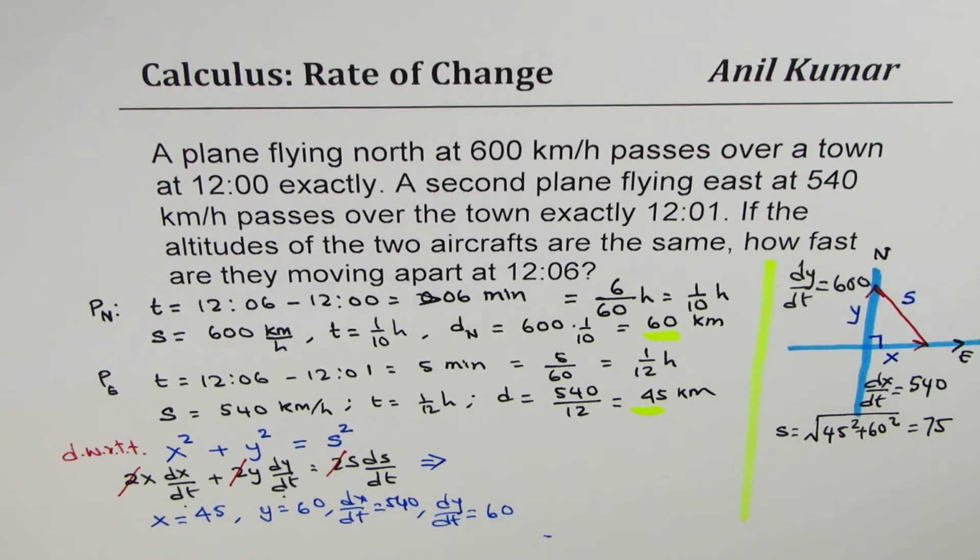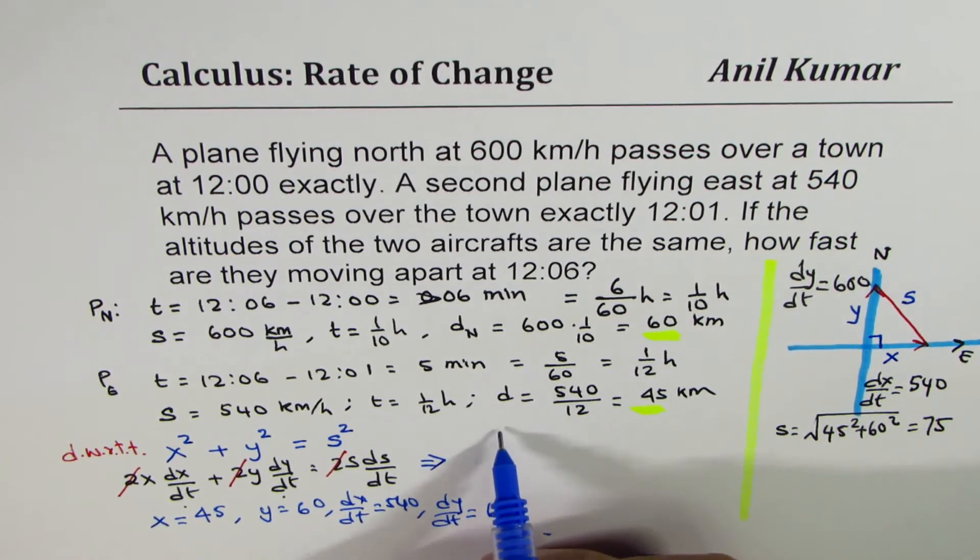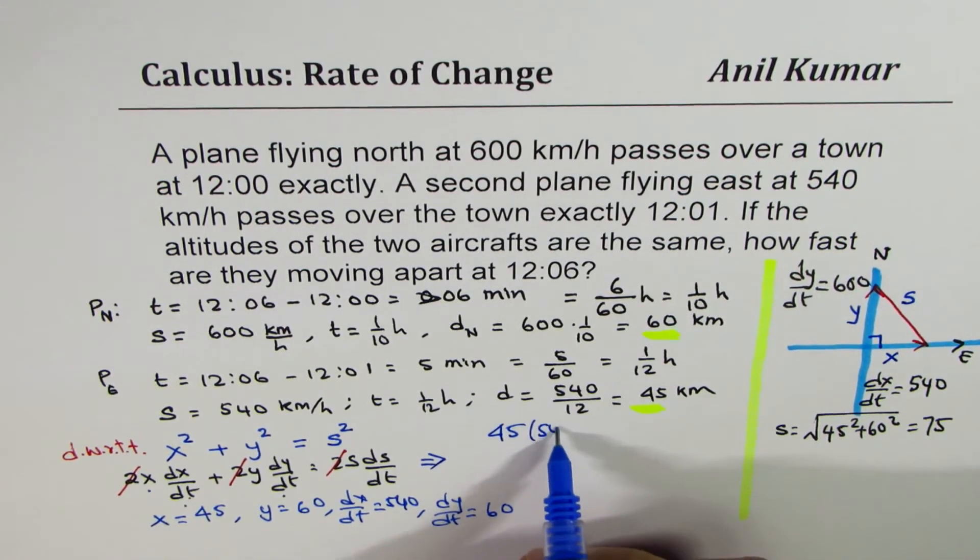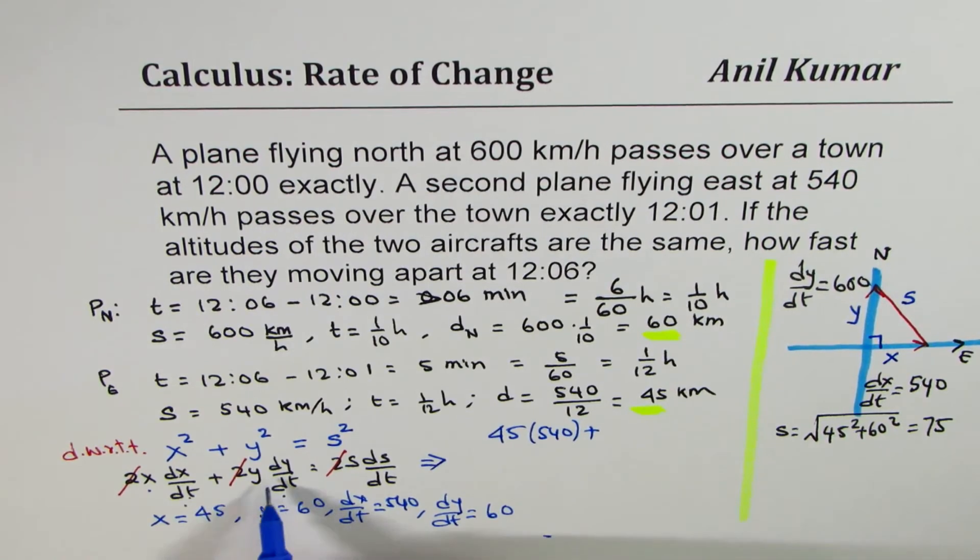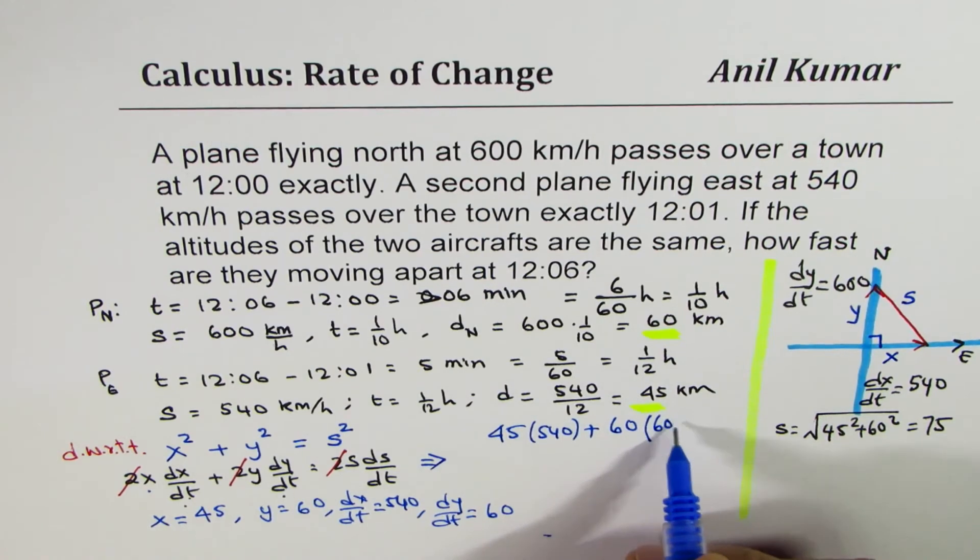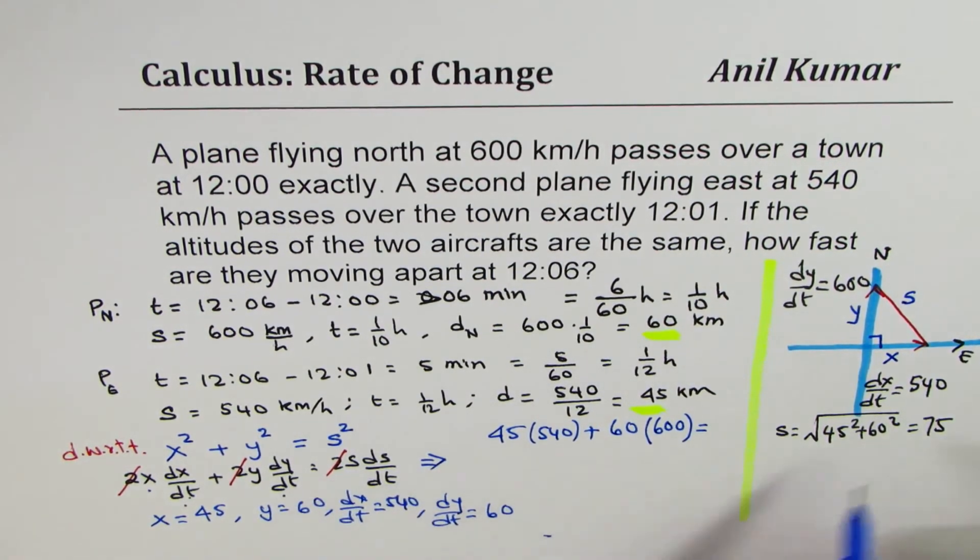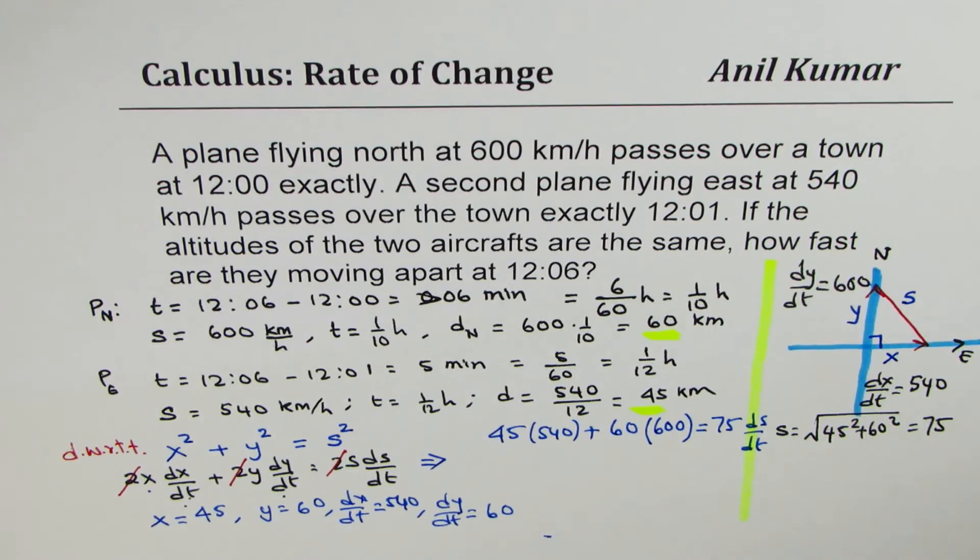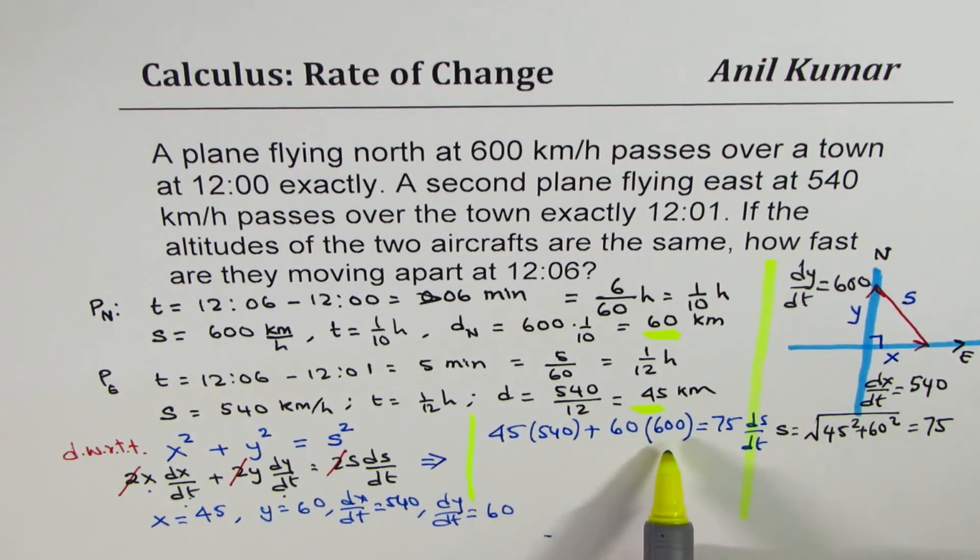So we have all the values. Let's substitute them. X is 45. So we have 45 for X. dX/dt is 540. Plus Y is 60. dY/dt is 600. Equals to S is 75, and dS/dt is what we need to find. Do you get it? So in this expression, rather equation, we have all known values, and we can always find dS/dt.